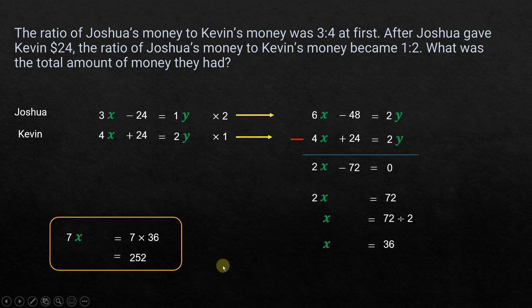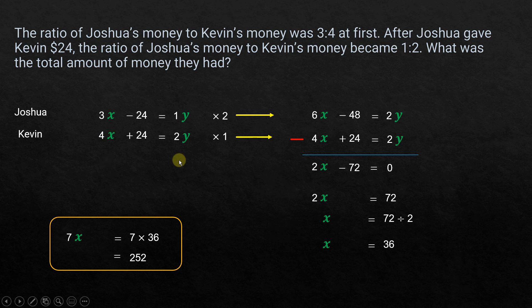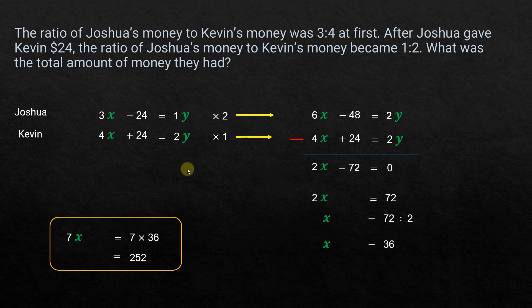Notice that if you simply add the two original equations instead, the 24s cancel and you're left with 7x = 3y — exactly the same relationship we derived in Method 1. From there you can substitute y in terms of x into one of the equations and solve for x directly.